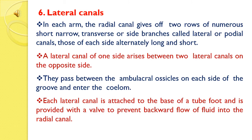Lateral canal: In each arm, the radial canal gives off two rows of numerous short, narrow, transverse or side branches called lateral or podial canals, those of each side alternately long and short. A lateral canal of one side arises between two lateral canals on the opposite side. They pass between the ambulacral ossicles on each side of the groove and enter the coelom. Each lateral canal is attached to the base of a tube foot and is provided with a valve to prevent backward flow of fluid into the radial canal.